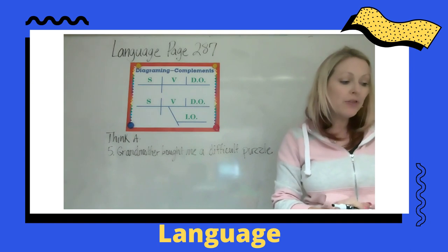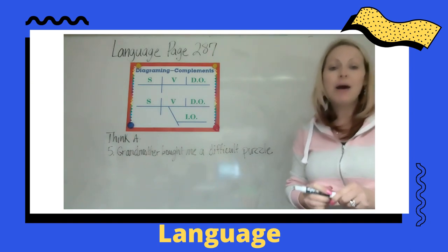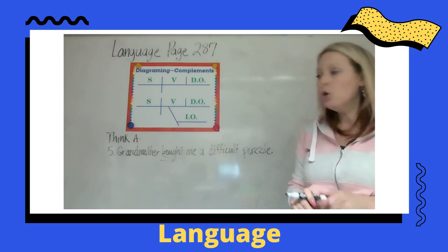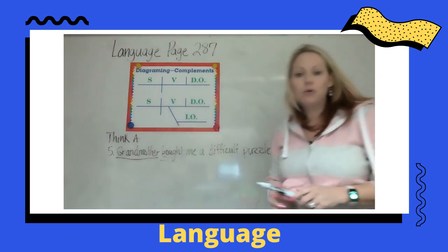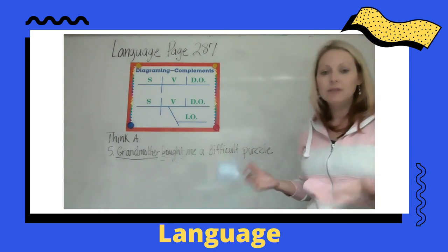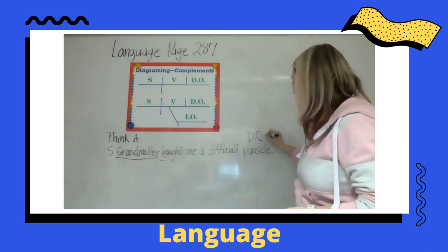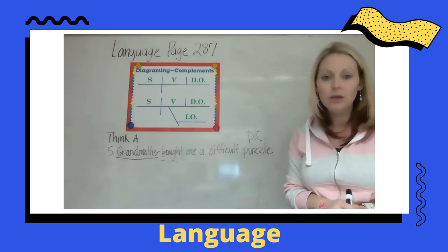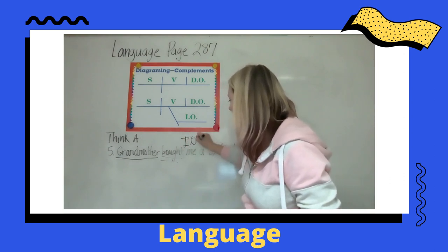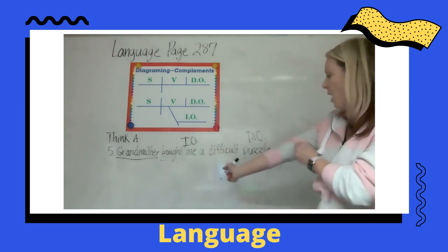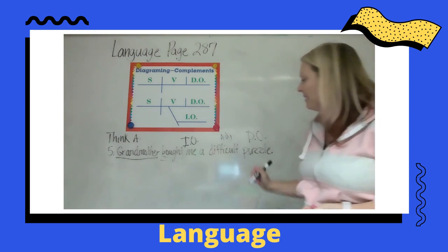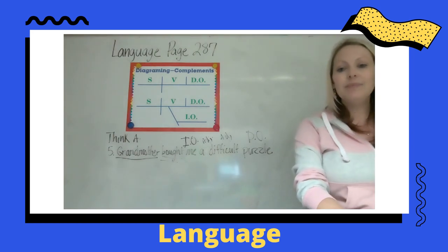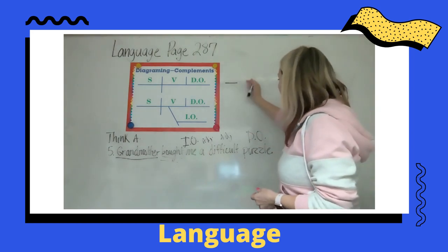Number five says: 'Grandmother bought me a difficult puzzle.' What is my action verb? Bought — double underline. Who did the buying? Grandmother. And what did she buy? That's our direct object: puzzle. To whom did she give the puzzle? To me — there is our indirect object. What type of puzzle? A difficult puzzle.